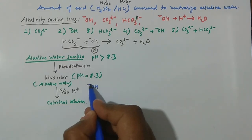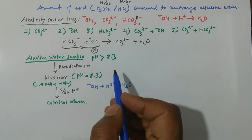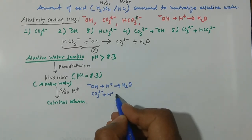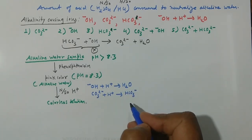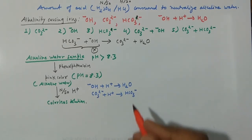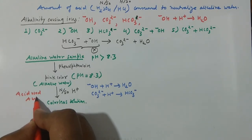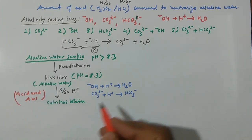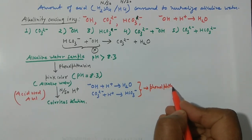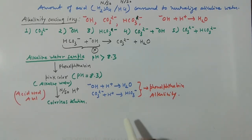During the phenolphthalein titration, two reactions occur: (1) the hydroxide ion reacts with H⁺ to form water (OH⁻ + H⁺ → H₂O), and (2) the carbonate ion reacts with H⁺ to form bicarbonate (CO₃²⁻ + H⁺ → HCO₃⁻). The acid consumed up to this colorless endpoint — 'A ml' — represents the phenolphthalein alkalinity.